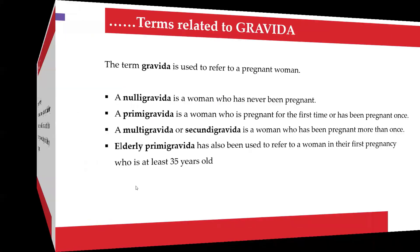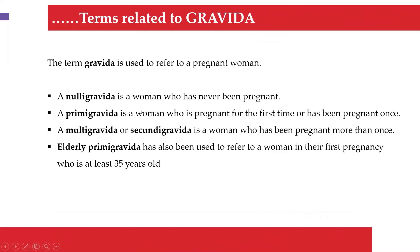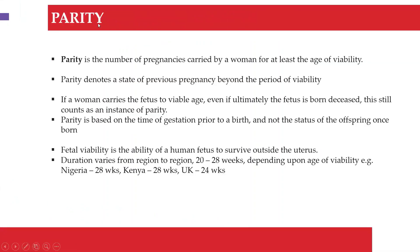There are certain terms related to gravidity. 'Gravida' is the term used for a pregnant woman. A woman who has never been pregnant is nulligravida. A woman pregnant for the first time is a primary gravida. A woman pregnant more than once is a multigravida. If a woman becomes pregnant for the first time at age 35 or older, she is termed an elderly primary gravida.